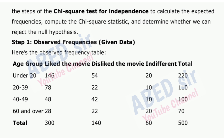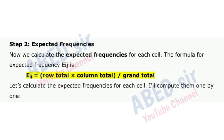We apply the steps of the chi-square test for independence to calculate the expected frequencies, compute the chi-square statistic, and determine whether we can reject the null hypothesis. Step 1: Observed frequencies — given data, here's the observed frequency table. Step 2: Expected frequencies. Now we calculate the expected frequencies for each cell. The formula for expected frequency E = (Row total × Column total) / Grand total. Let's calculate the expected frequencies for each cell.